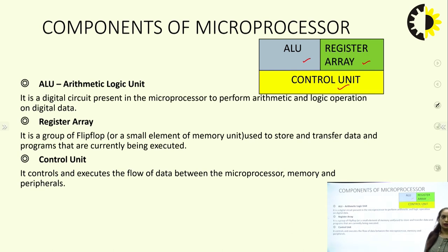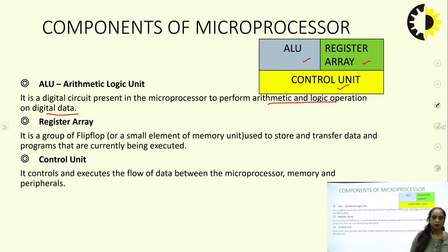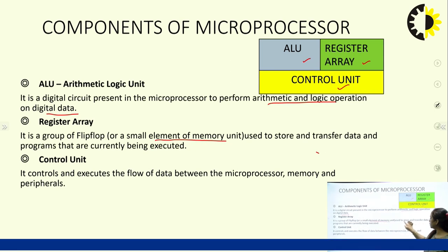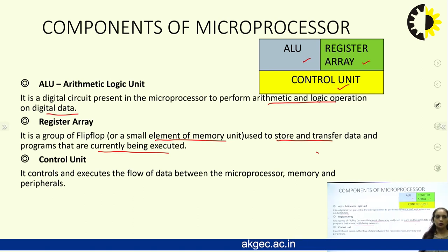The Arithmetic and Logical Unit (ALU) is a digital circuit present in the microprocessor to perform arithmetic and logical operations on any binary data. The register array is a group of flip-flops — small elements of memory — used to store data and to transfer data and programs currently being executed. The control unit controls the flow of data between the microprocessor, the memory, and other peripheral devices.